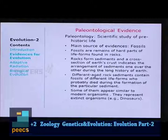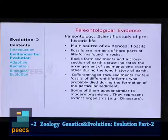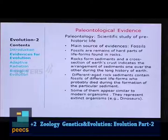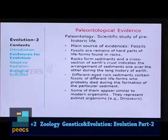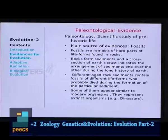What is paleontology? It is a branch of science that deals with prehistorical life. The main source of evidence in paleontology is fossils. Fossils are remains of hard parts of life forms found in rocks — hard parts like bones of mammals, cuticle of insects, shells of molluscs, etc. Even if the flesh decays, the hard materials remain and become part of the rock. These rocks form sediments — layers — and the cross-section of Earth's crust indicates the arrangement of sediments built up over the long history of the Earth.